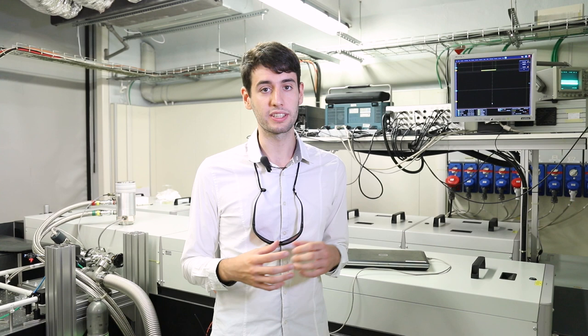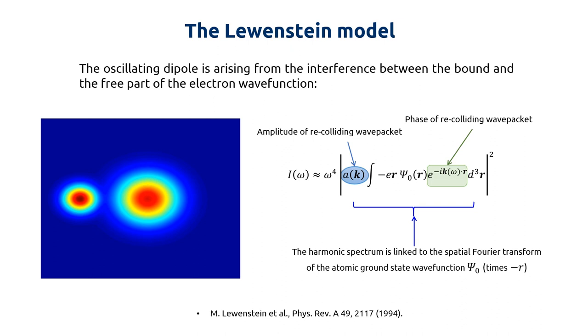As firstly demonstrated by Lewenstein and co-workers, in this case, the light emission is described by the oscillating dipole originating from the interference between the part of the electron wave function that is tunnel ionized.